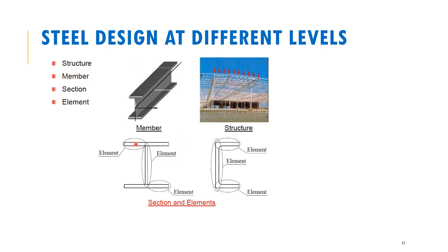That's your universal beam or universal column I-shaped cross-section, and this is your PFC. A vertical member on its own is referred to as an element; the horizontal ones are also elements. Combine all of them together and they form your section. Looking at the full beam, this is what we refer to as the member, and linking different members together forms your structure. So the hierarchy is: elements form a section, a section as a whole is a member, and different members connected together form your overall structure.